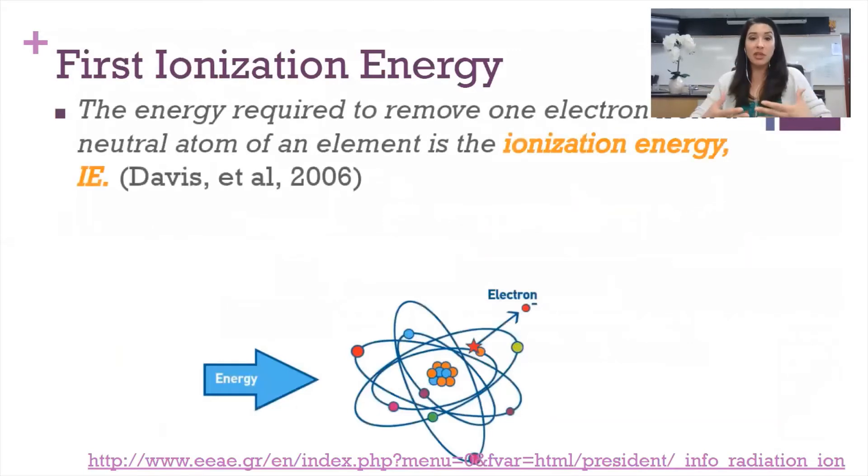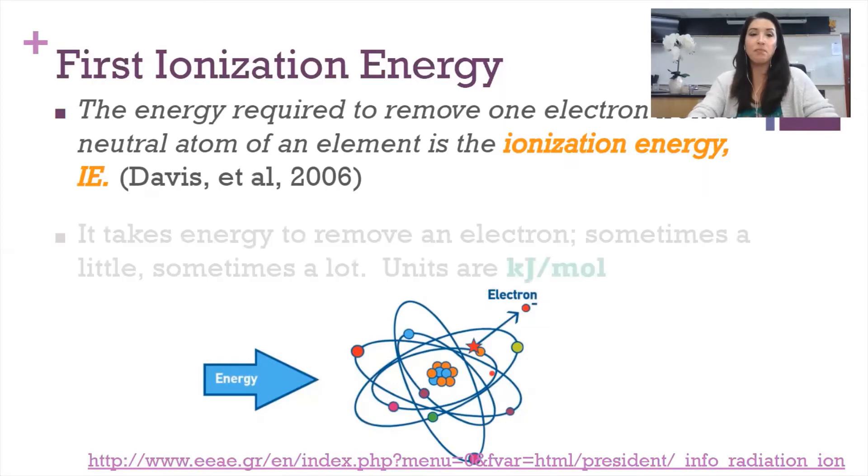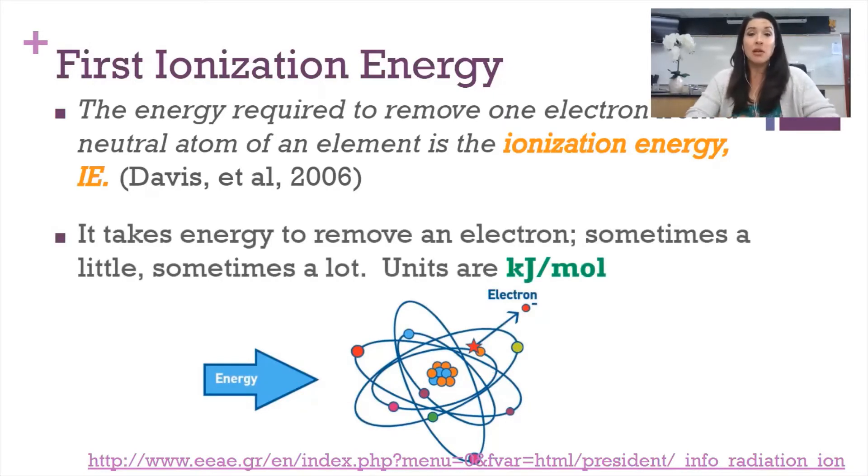Our formal definition of ionization energy is the energy required to remove one electron of a neutral atom of an element. That's the first ionization energy, the removal of that first electron. There's also second and third ionization energies, but for this year, we're going to focus primarily on the first. As you can imagine, it takes energy to be input into the system some way to either add or remove an electron. We measure these energy amounts in a unit called kilojoules per mole.